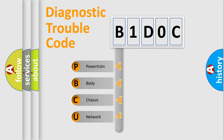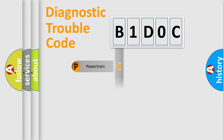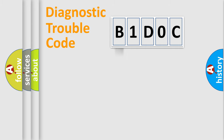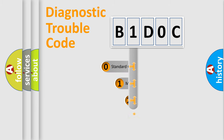We divide the electric system of an automobile into four basic units: Powertrain, Body, Chassis, and Network. This distribution is defined in the first character of the code.